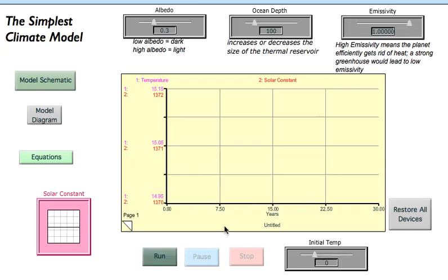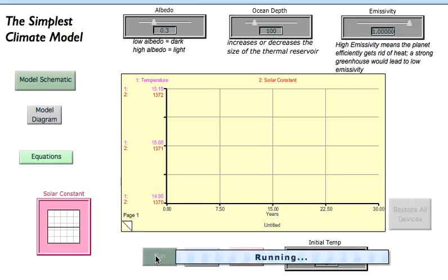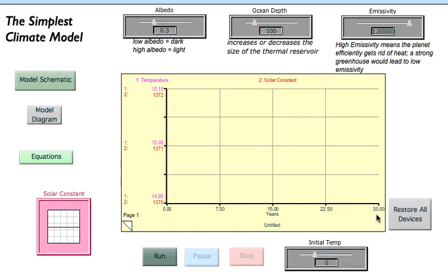So first I'm going to run the model and just talk about what we see. You click the run button here and wait for it to execute, and then when it's done it'll display the results of this model run which is going to go for 30 years in this case.